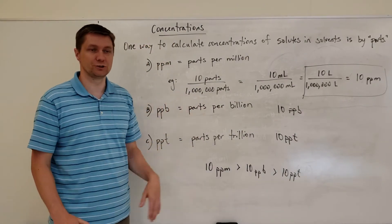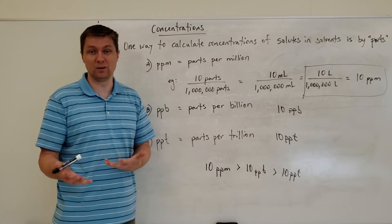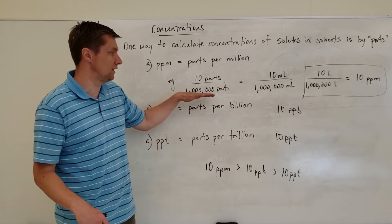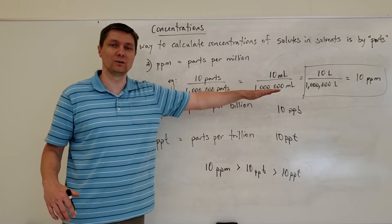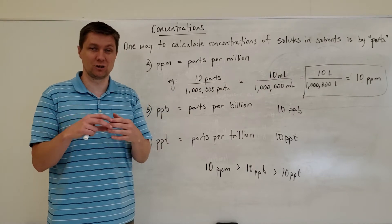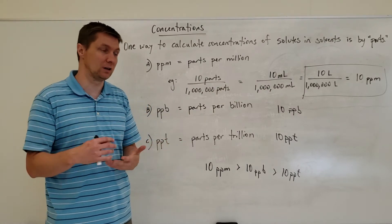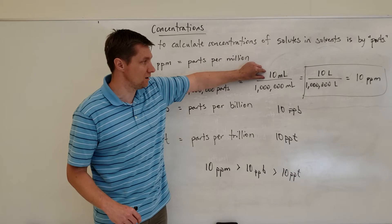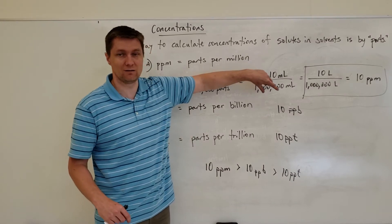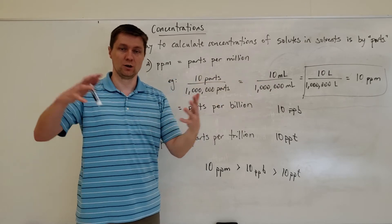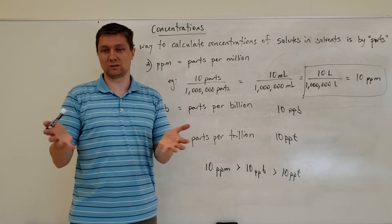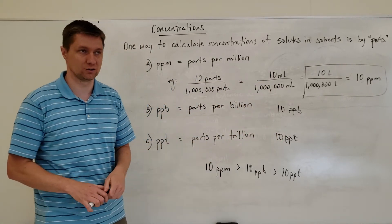We can also express concentrations in units of parts per billion. All that means is that instead of on the bottom having a million now we have a billion. That's a concentration that's going to be a little bit less than parts per million simply because I have ten milliliters dissolved in not a million milliliters anymore but a billion milliliters. So dissolved in a larger volume means it's going to be a less concentrated solution.